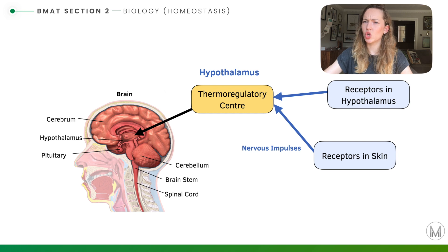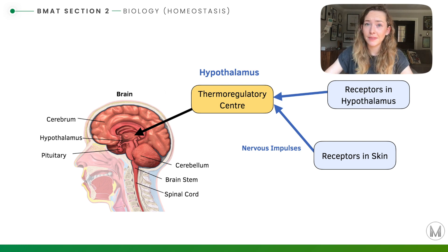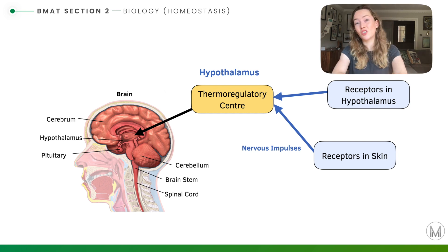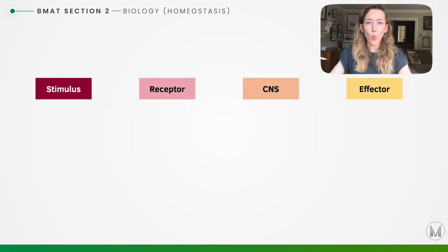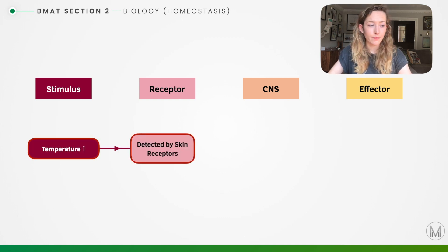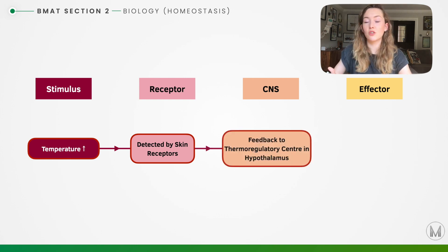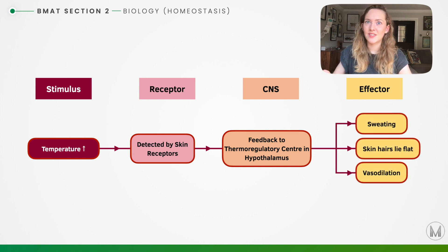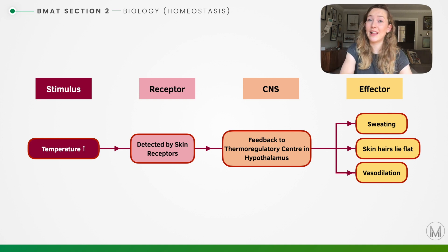How does the brain control our body temperature? The brain has a thermoregulatory centre in the hypothalamus that checks blood temperature, and we also have receptors on our skin that indicate external body temperature. If body temperature rises, skin receptors detect the increase and send a signal to the central nervous system — the thermoregulatory centre in the hypothalamus — which sends signals to effectors: sweating, skin hairs lying flat to trap less heat, and vasodilation.